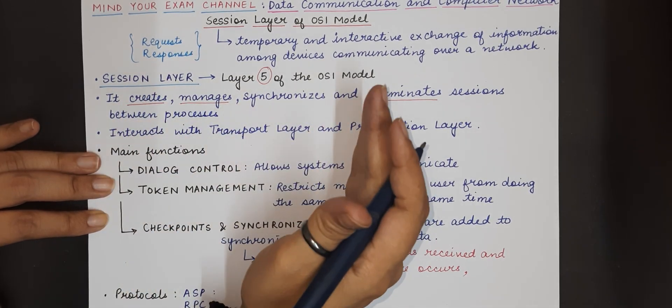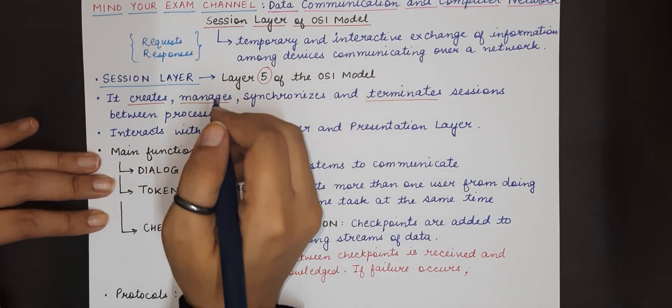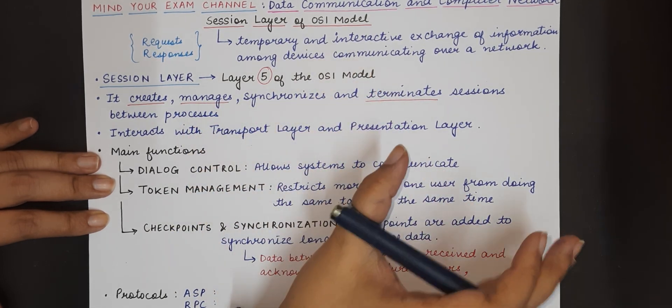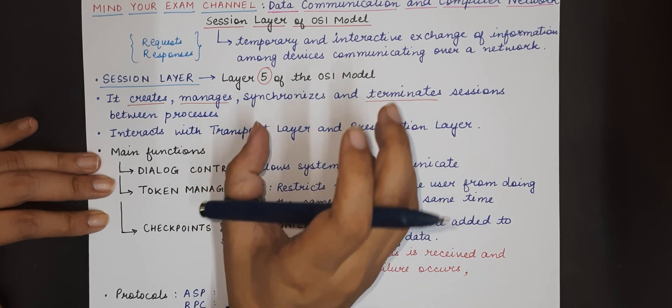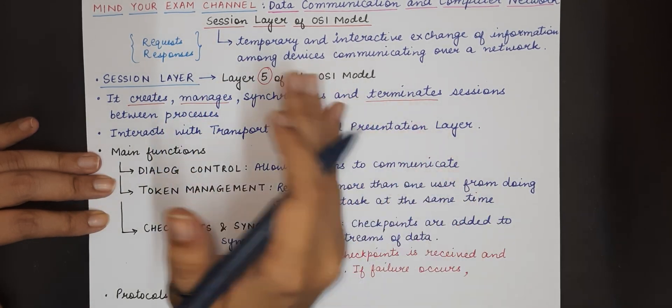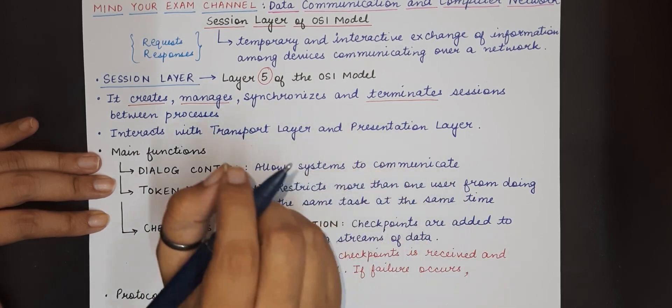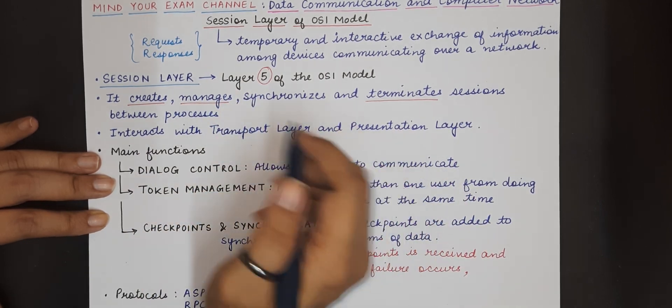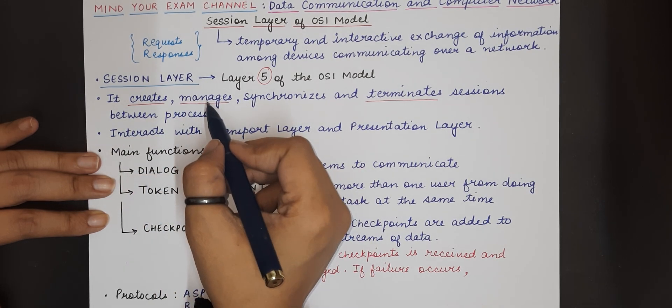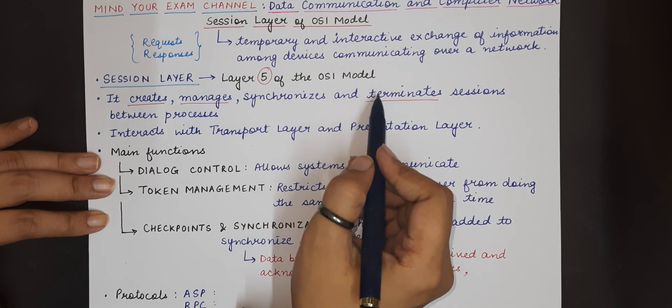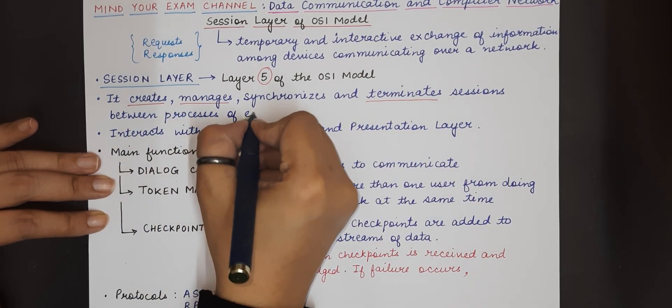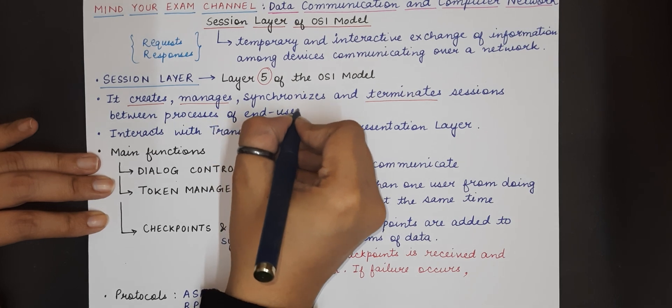So when two machines are interacting, they would have started some applications on their machines, on their hosts or systems, and those applications when they interact with each other, a session is established. Once the session gets established, the responsibility of the session layer is to manage that session, synchronize the data that is exchanged, and then terminate the session between the processes of end user applications.